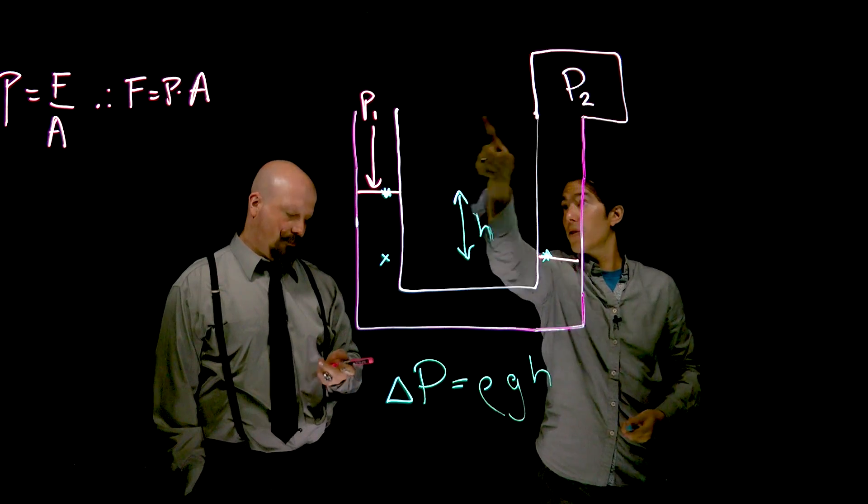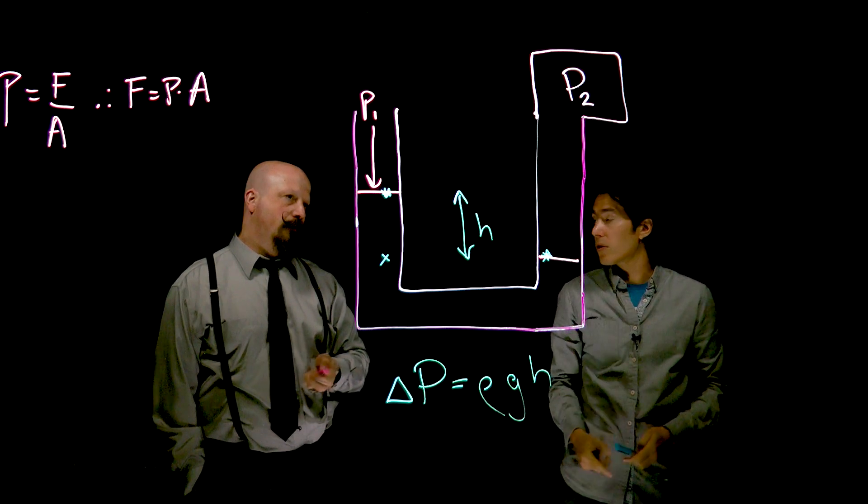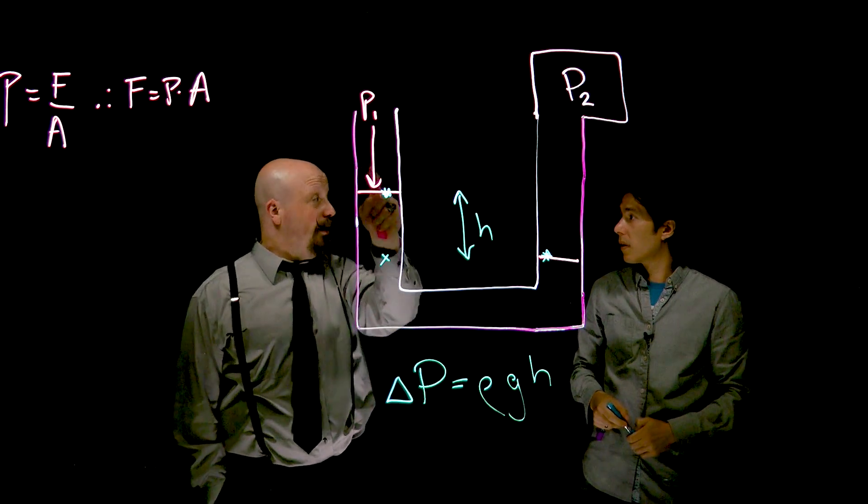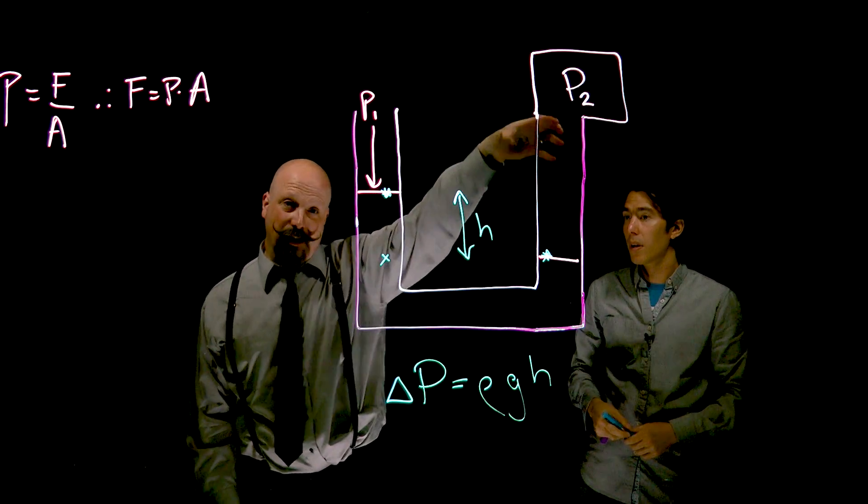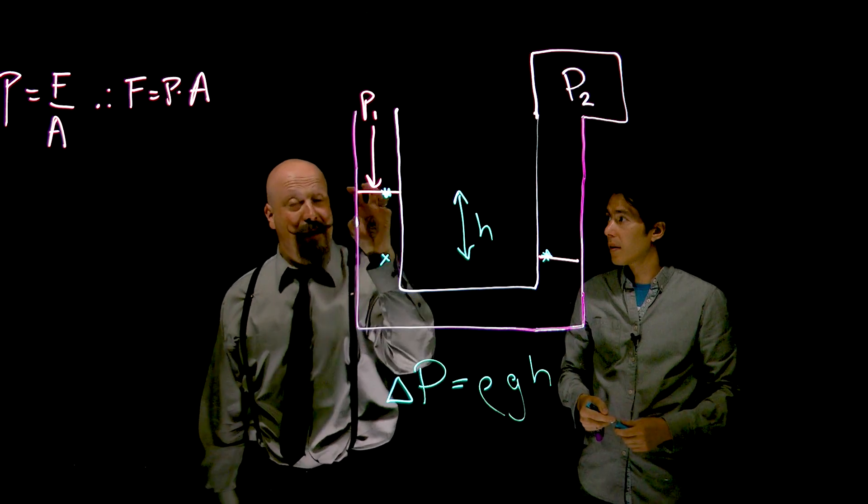So the fact that you see two different water levels suggests that the pressure at each water level differs. And we could say, well, P2 minus P1, there would be a pressure difference based on rho G H. And you could say also that this has to be a greater pressure than here because it's physically pushing this liquid up. Yeah, absolutely. It's fighting against the force of gravity of this amount of material there.